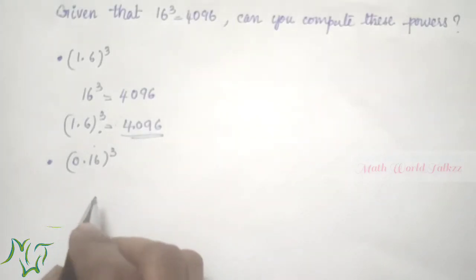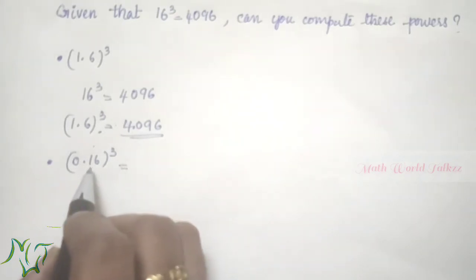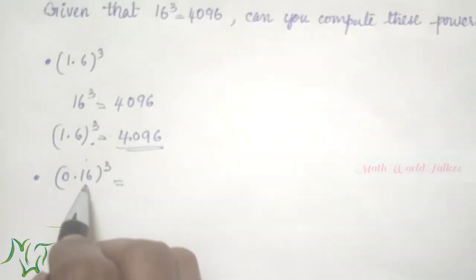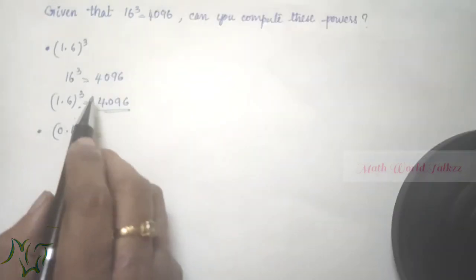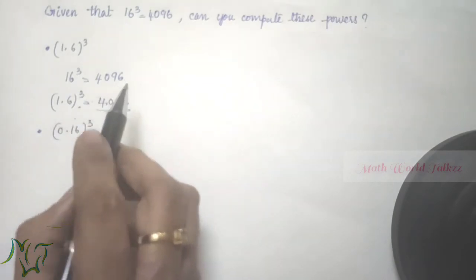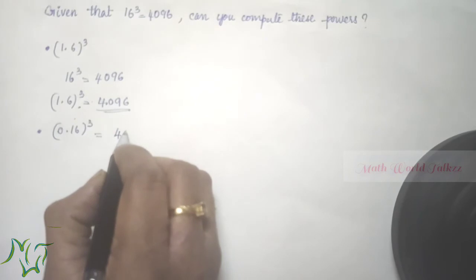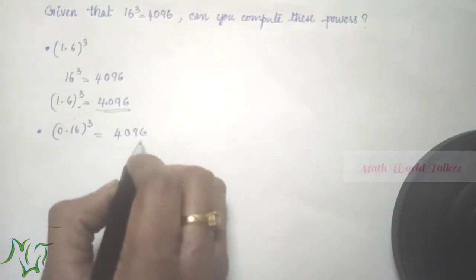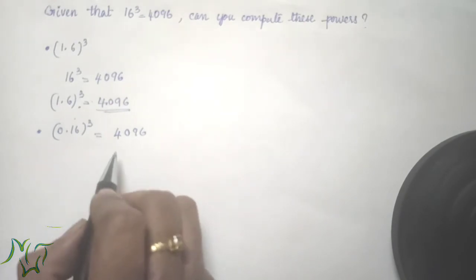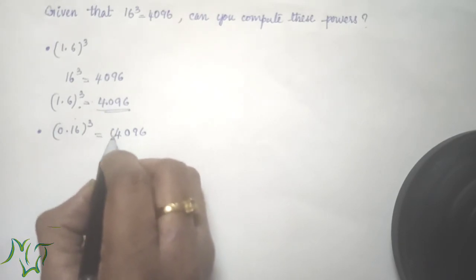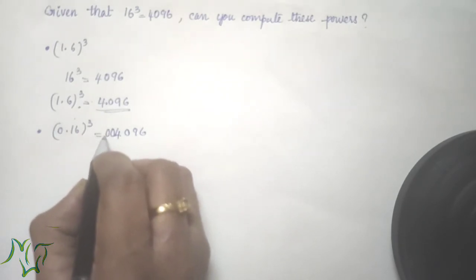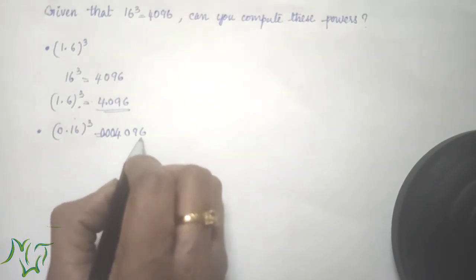0.16 whole cube. Here we can see 2 decimal places and the power is 3, so there must be 6 decimal places in the answer. 16 cube is already given as 4096 — we have 4 digits. We need 2 more decimal places, so we add a zero. The final answer is 0.004096.